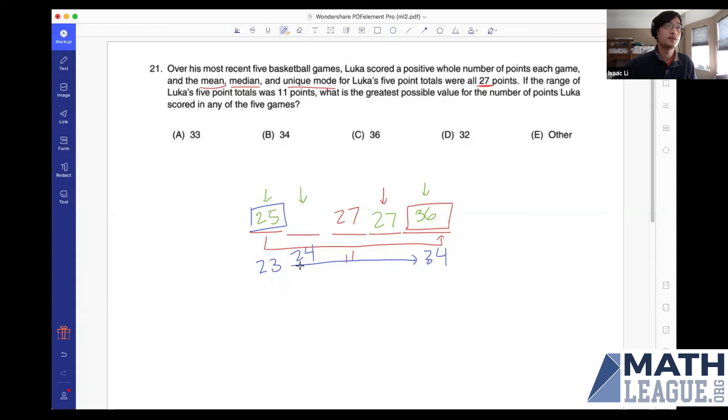Note that 24 is 3 less than 27, 23 is 4 less than 27, and 34 is 7 more than 27, so it averages out to 27, and our answer is 34.